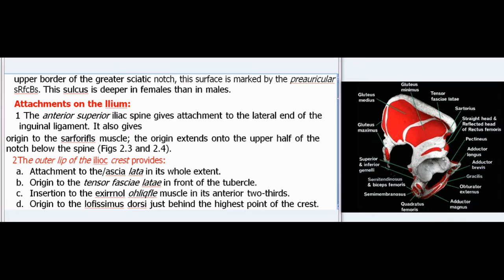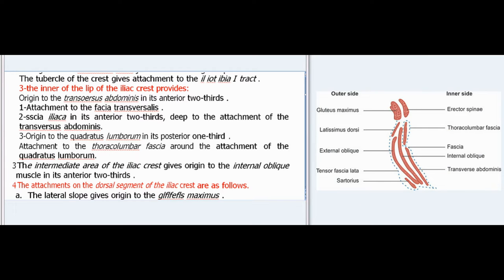Along the upper border of the greater sciatic notch, the pelvic surface is marked by the preauricular sulcus, which is deeper in females than in males. Attachments on the ilium: The anterior superior iliac spine gives attachment to the lateral end of the inguinal ligament and also gives origin to the sartorius muscle, extending onto the upper half of the notch below the spine. The outer lip of the iliac crest provides attachment to the fascia lata in its whole extent, origin to the tensor fasciae latae in front of the tubercle, insertion to the external oblique muscle in its anterior two-thirds, and origin to the latissimus dorsi just behind the highest point of the crest. The tubercle of the crest gives attachment to the iliotibial tract.